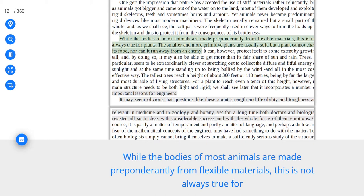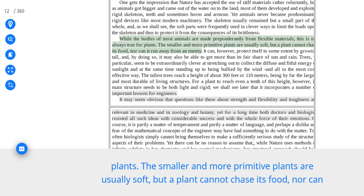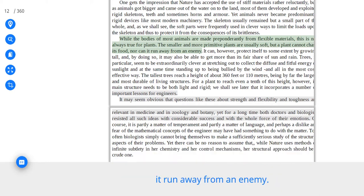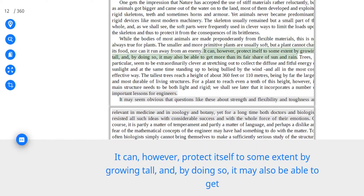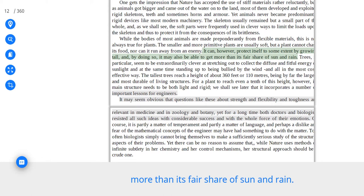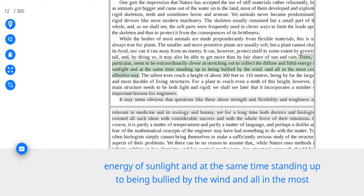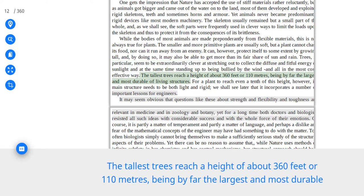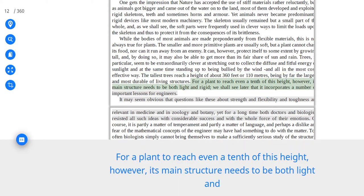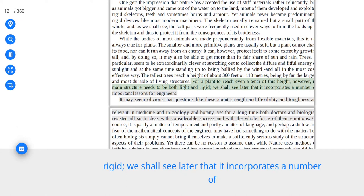While the bodies of most animals are made preponderantly from flexible materials, this is not always true for plants. The smaller and more primitive plants are usually soft, but a plant cannot chase its food, nor can it run away from an enemy. It can, however, protect itself to some extent by growing tall, and, by doing so, it may also be able to get more than its fair share of sun and rain. Trees, in particular, seem to be extraordinarily clever at stretching out to collect the diffuse and fitful energy of sunlight and at the same time standing up to being bullied by the wind, and all in the most cost-effective way. The tallest trees reach a height of about 360 feet or 110 meters, being by far the largest and most durable of living structures. For a plant to reach even a tenth of this height, however, its main structure needs to be both light and rigid.